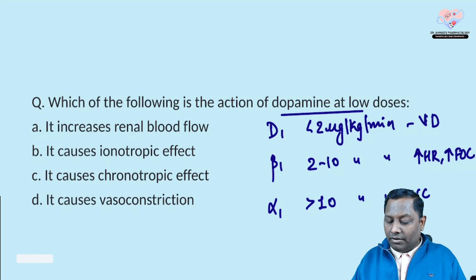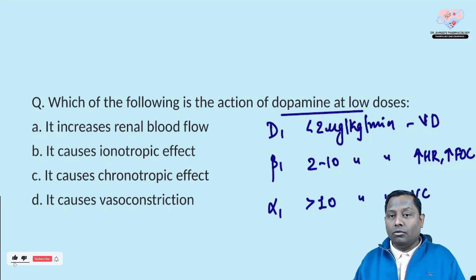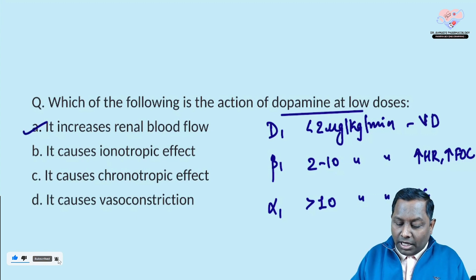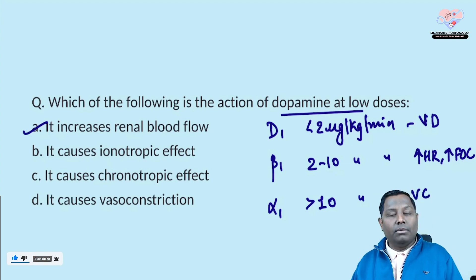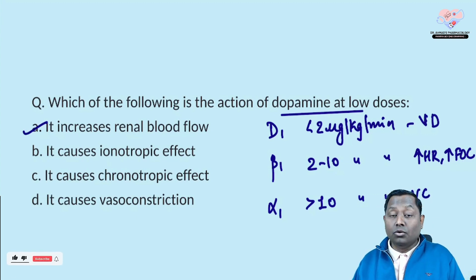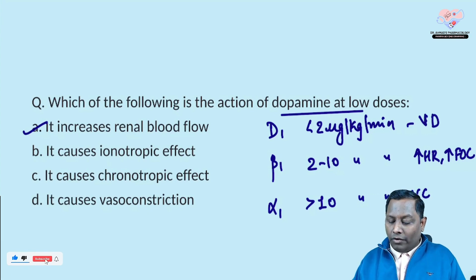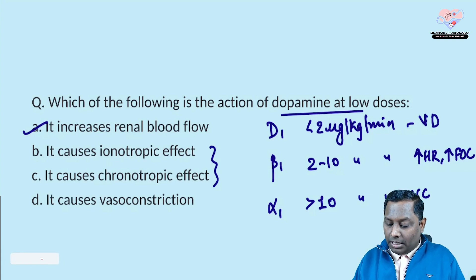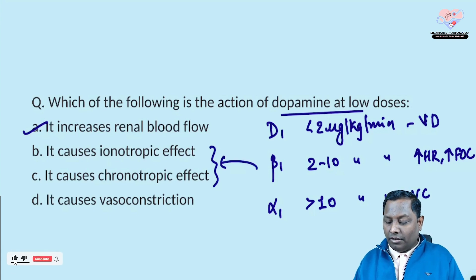Dopamine at low doses causes vasodilatation. Dopamine receptors are mainly present on renal and mesenteric vasculature, so they increase renal blood flow and mesenteric blood flow. Inotropic effect is seen at 2–10 mcg/kg/min, and vasoconstricting plus chronotropic/inotropic effects are seen at doses above 10 mcg/kg/min.